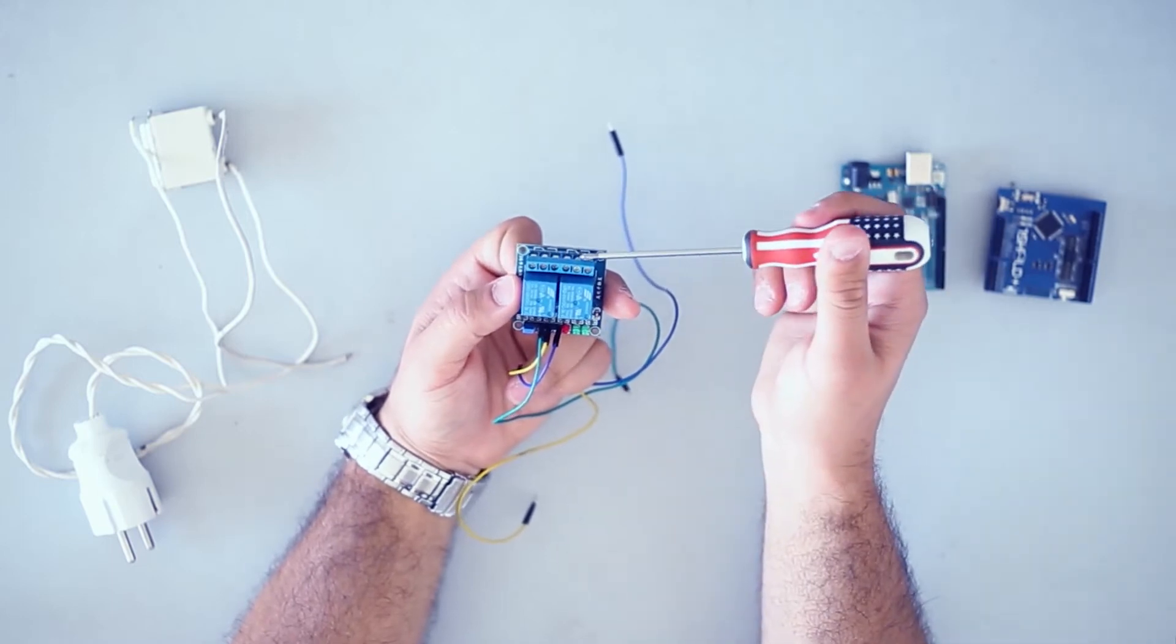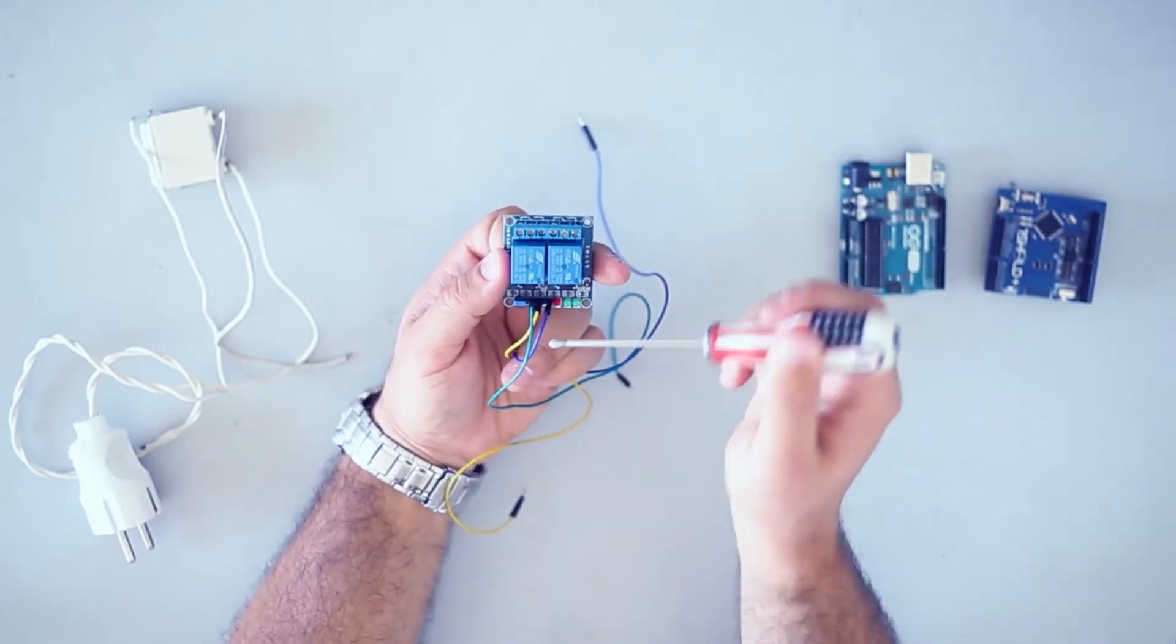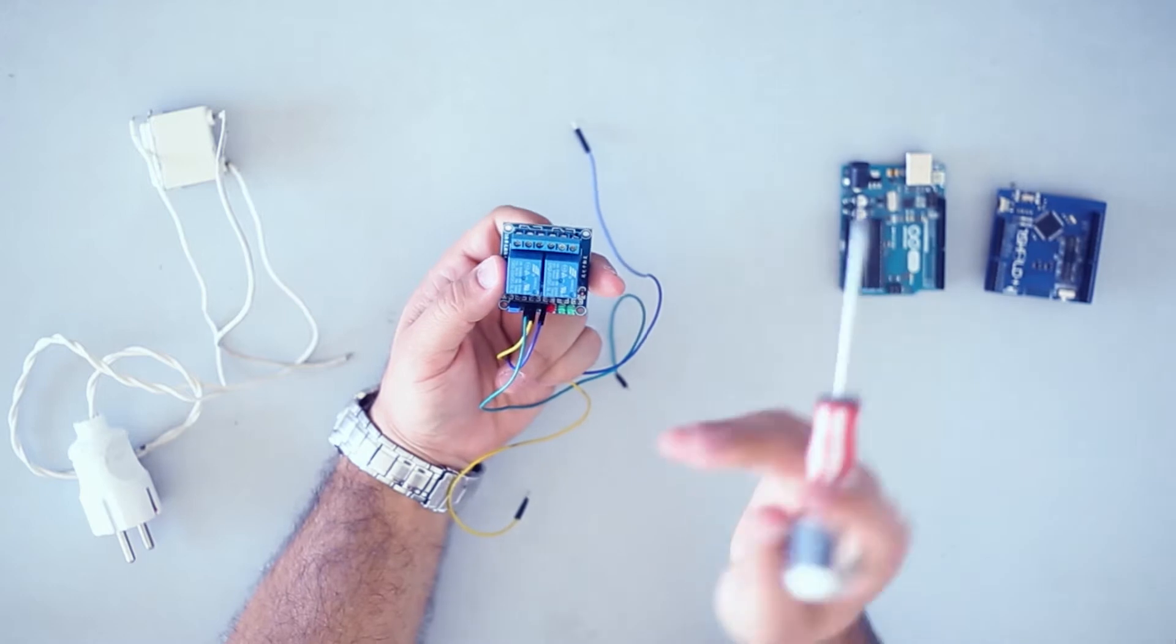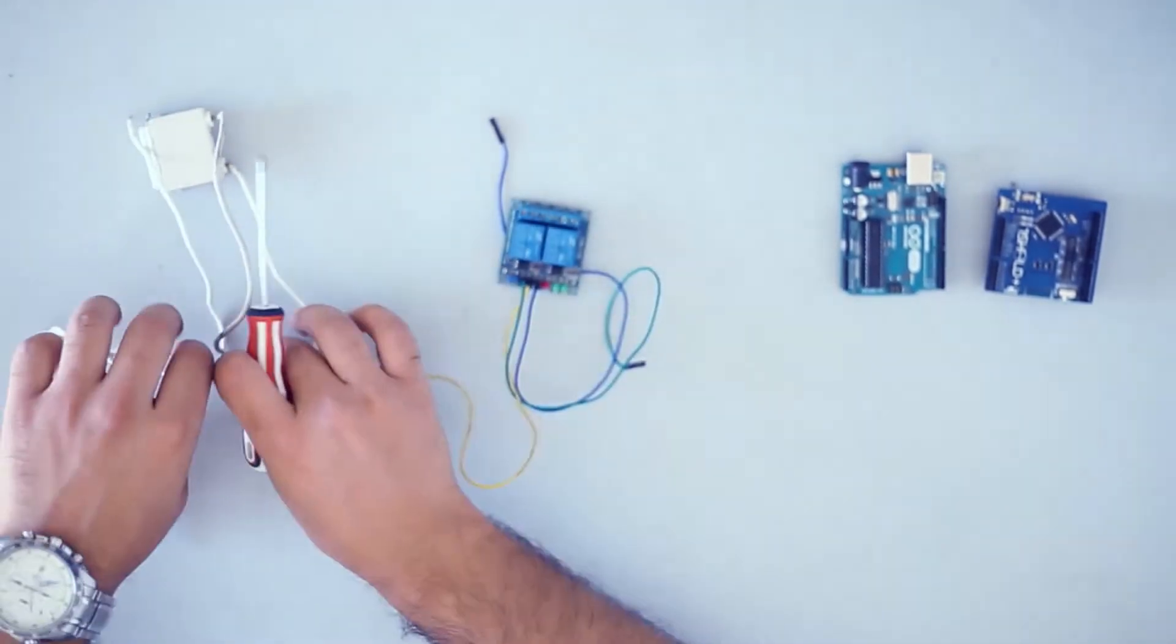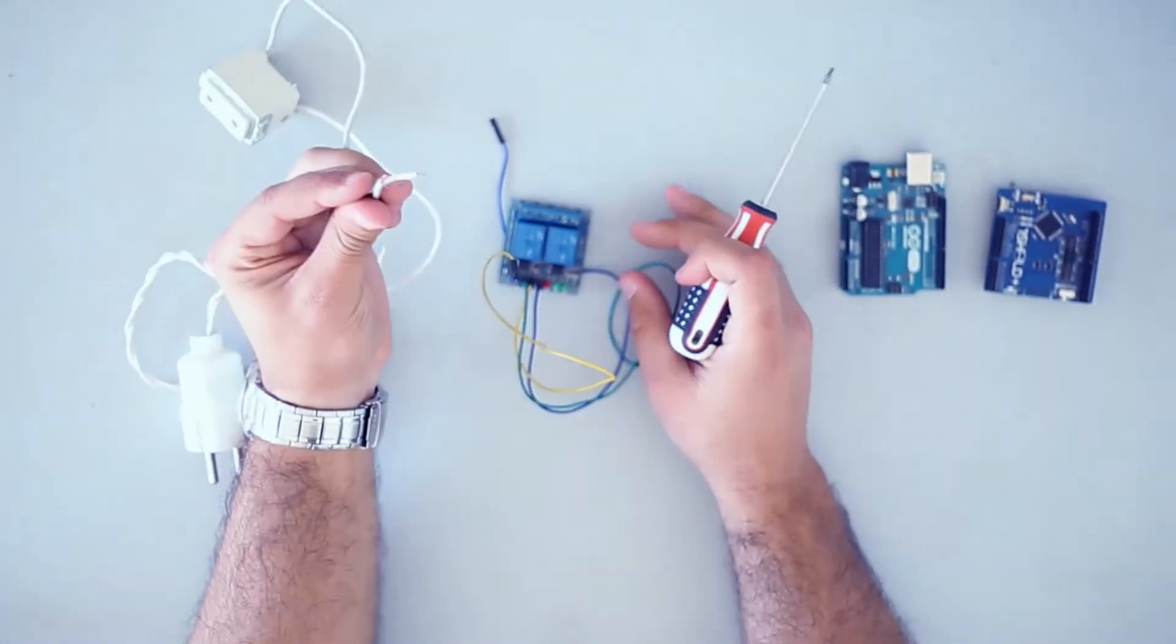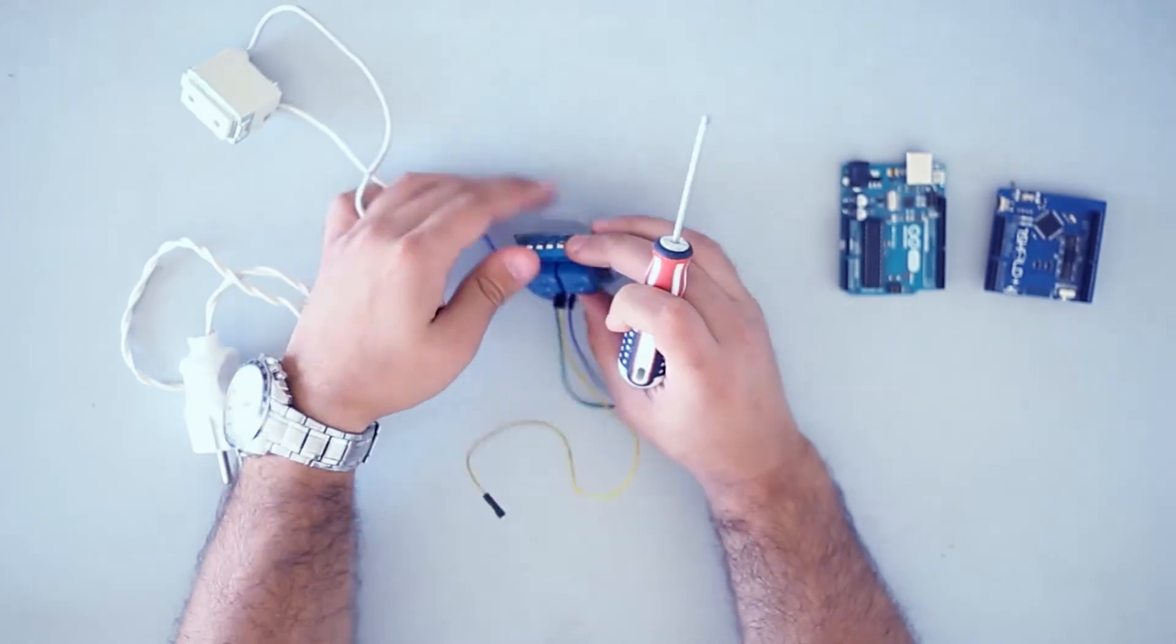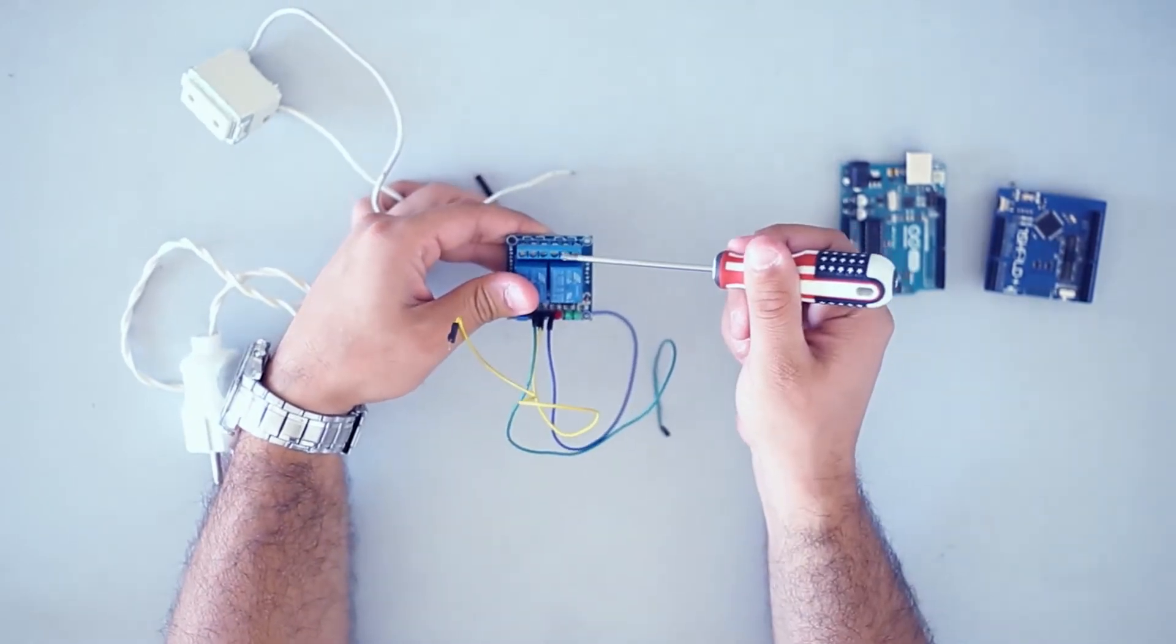So the relay board has high voltage power lines, low voltage power lines, and one signal control line. First I'm going to connect the plug on the common and normally open pins of the relay board.